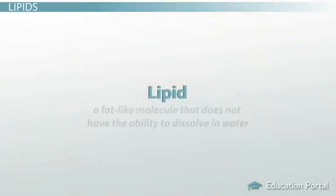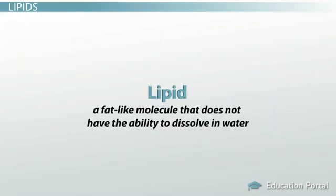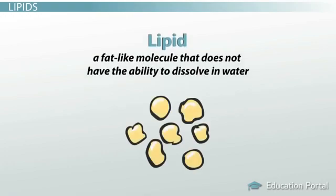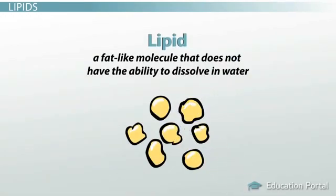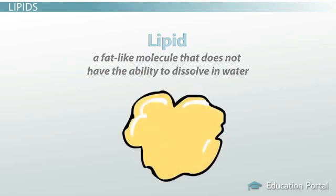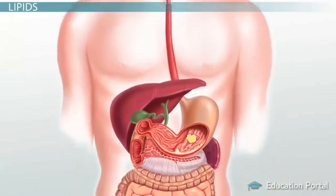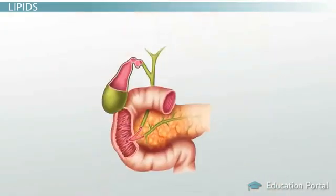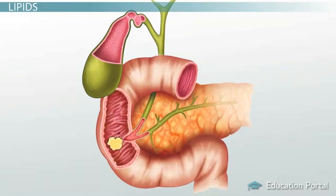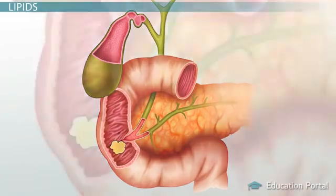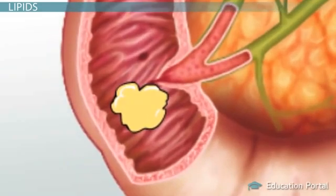A lipid is defined as a fat-like molecule that does not have the ability to dissolve in water. This inability to dissolve in water adds an element of difficulty to fat digestion. Because fat does not like water, it tends to clump together and form large droplets as it moves through your digestive system. By the time fat reaches your small intestine, it has not been digested at all, and looks like a fairly large glob of fat.